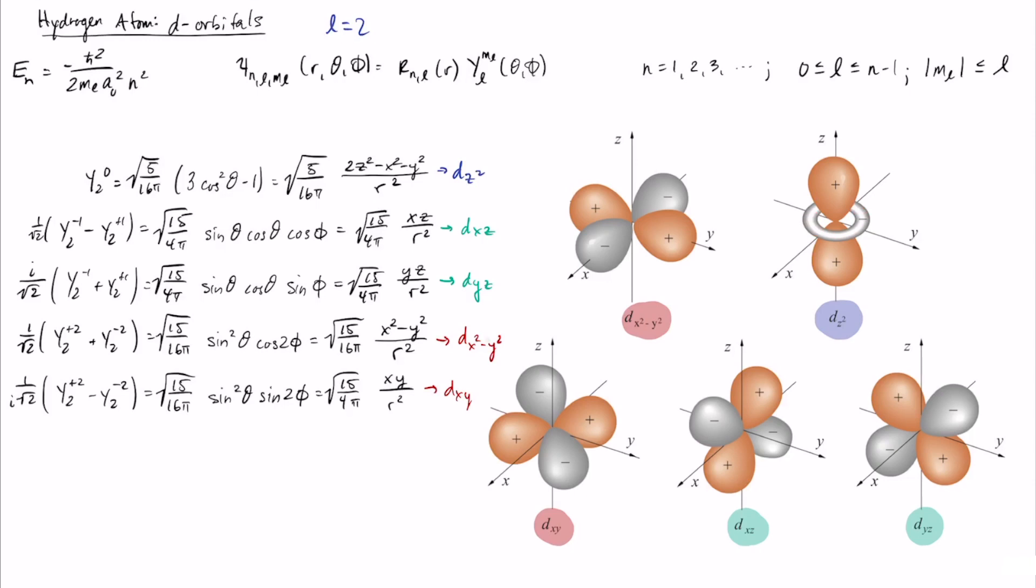And so again this still has inversion symmetry. If you flip this across the origin you go from plus to plus and if you flip across the origin in this ring, this ring is centered on the xy plane, you go from minus to minus. But this thing is oriented along the z axis. It's the only one that's purely oriented along the z axis. The rest all have some mixed axis orientation.